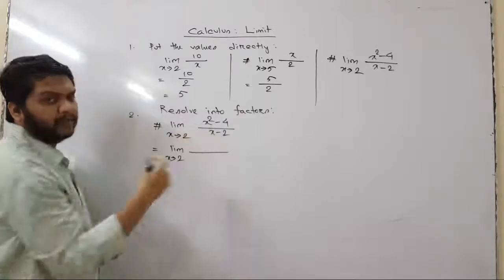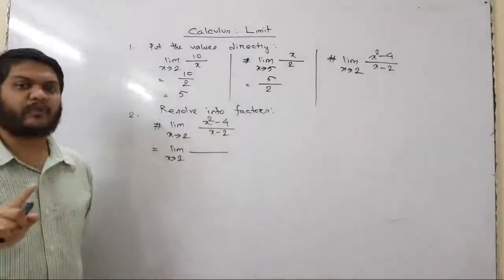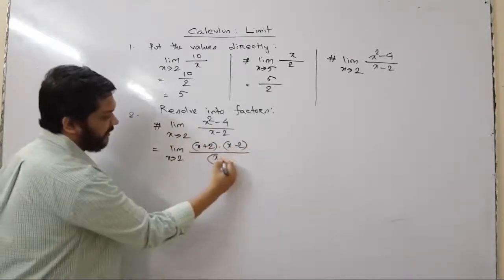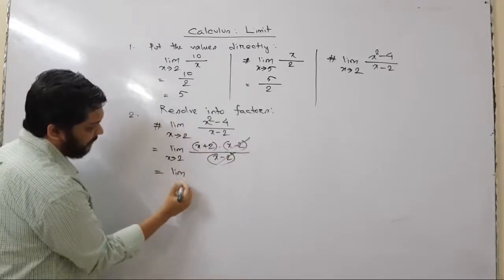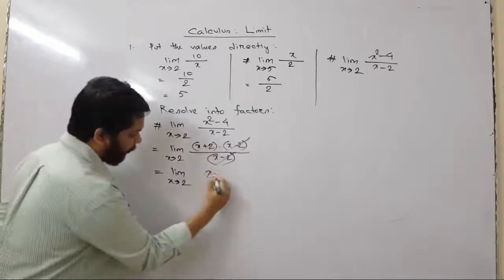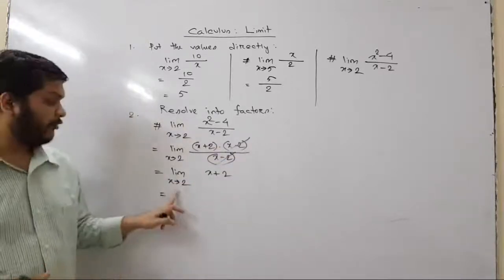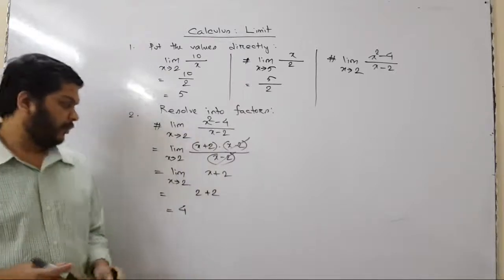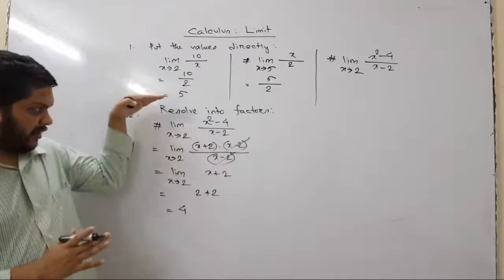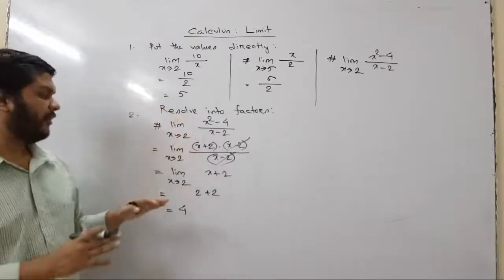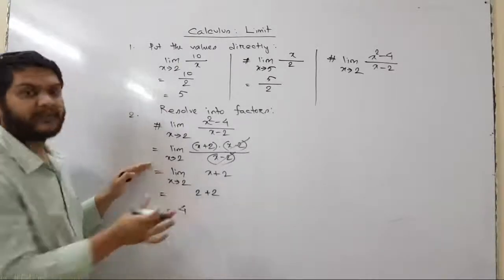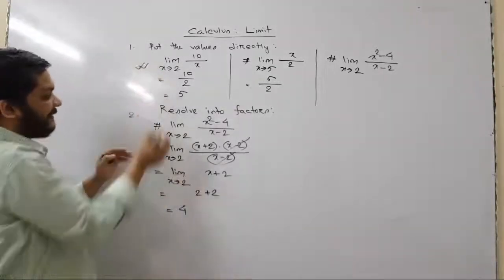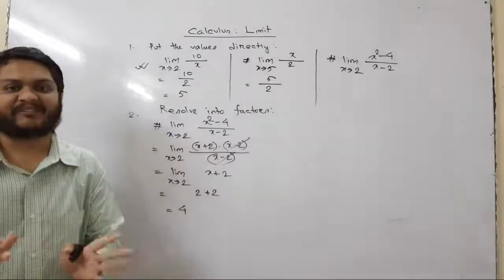We apply the formula a² - b²: x² - 4 can be written as (x + 2)(x - 2). So the expression becomes (x + 2)(x - 2) divided by (x - 2). The (x - 2) terms cancel, leaving limit as x tends to 2 of (x + 2). Now we can substitute: 2 + 2 equals 4. After applying this technique we reach a point where substitution causes no problems.